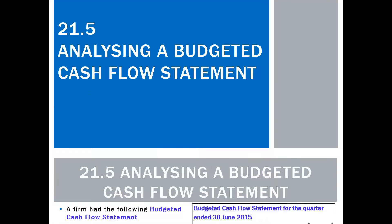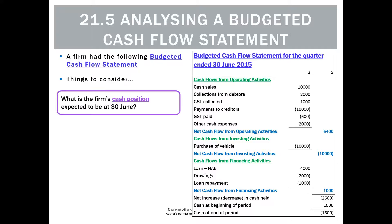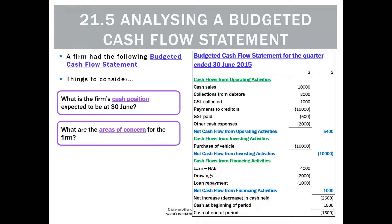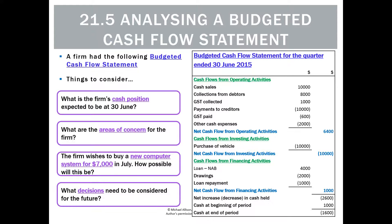Let's look at how we'd analyze a budget cash flow statement — it's basically the same way we analyze a regular cash flow statement. All we're doing is remembering that this is a budget and it's just a prediction about the future. Looking at a cash flow statement, some questions we might have are: what do we expect the cash position to be at 30th of June? Are there any areas of concern? And are there any decisions we need to make for the future? Looking at the important info, we can start to answer these questions — although they're guesses, it's useful info because we can now start planning for the future.